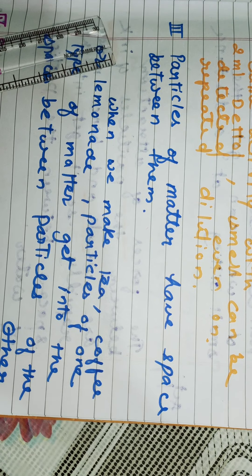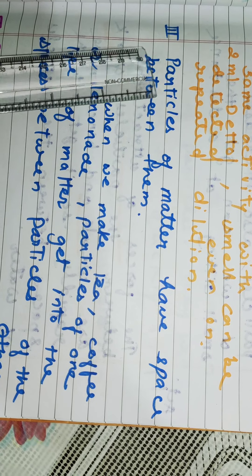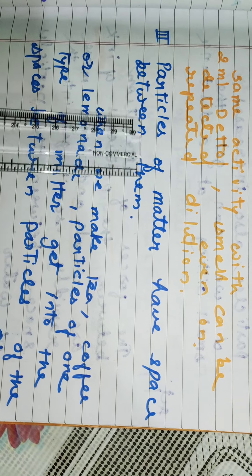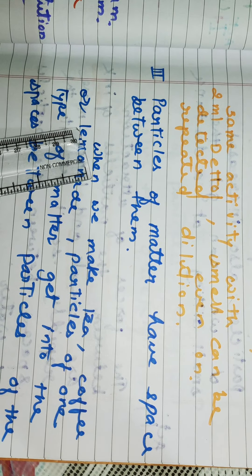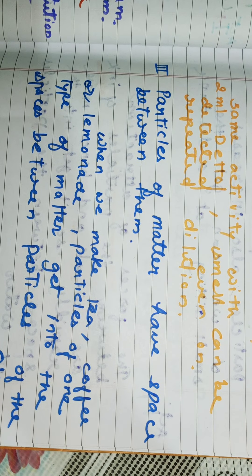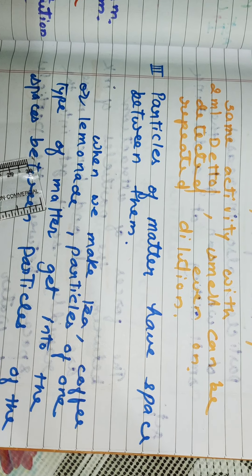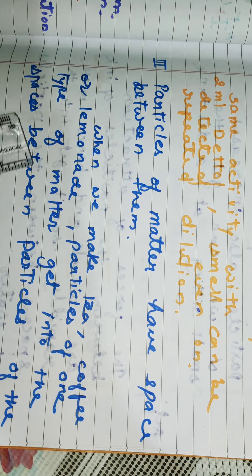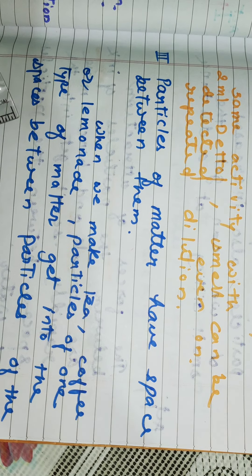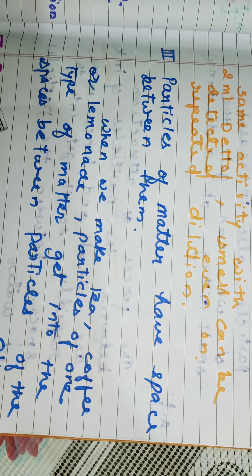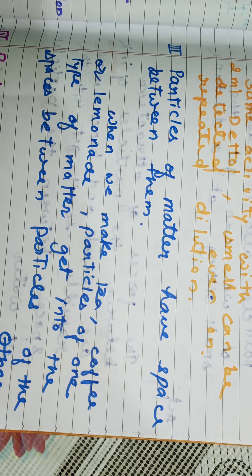We are going to see the third property, that is particles of matter have space in between them. Just like we have done the activity 1.1. When we make tea, coffee or lemonade, particles of one type of matter get into the space between the particles of the other.